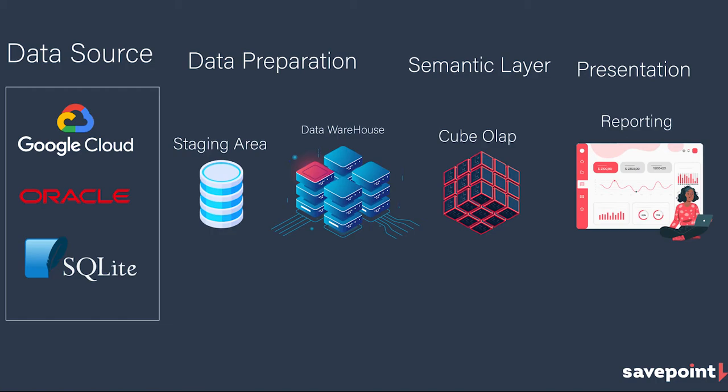The second step is the data warehouse. During this phase, we will create dimensions and fact tables and load them into the database. Because the majority of the work is done in the staging area, we will only do a little bit of transforming and calculating metrics in this step.